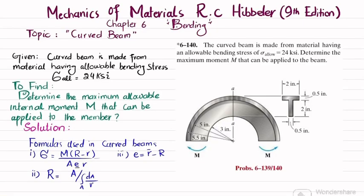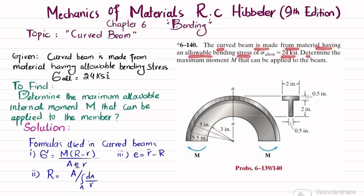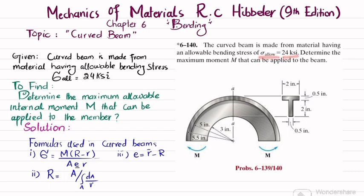Welcome back. In this video we are going to solve problem 6-140, taken from chapter 6 on bending from Mechanics of Materials by R.C. Hibbeler, 9th edition. The topic is curved beams. The problem states: a curved beam is made from material having an allowable bending stress of 24 KSI. Determine the maximum moment M that can be applied to the beam.